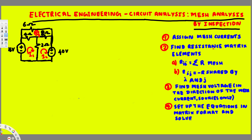The next step is to find the resistance matrix elements. First we look at R11 — we find all the resistances in the first loop and add them together. In the first mesh we have two ohms and four ohms, so four plus two equals six.